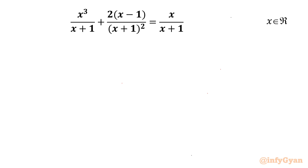Welcome to InfiJarn friends. In this video we are going to take up one very interesting rational equation problem. It is x³ over (x+1) plus 2 times (x−1) over (x+1)² equal to x over (x+1), where x belongs to real numbers. I will demonstrate two different methods to solve this problem.